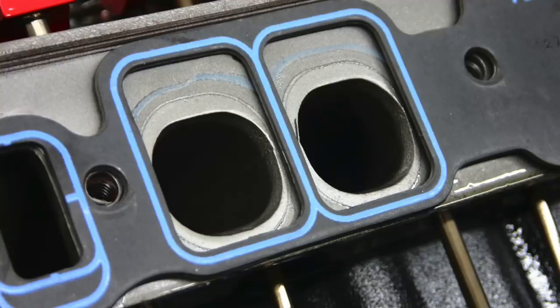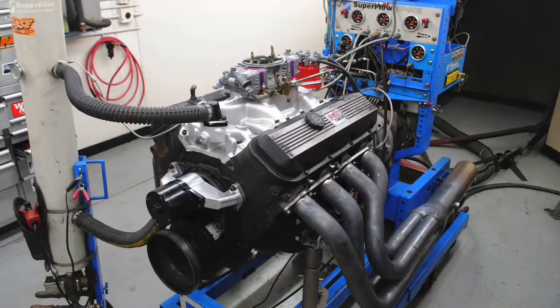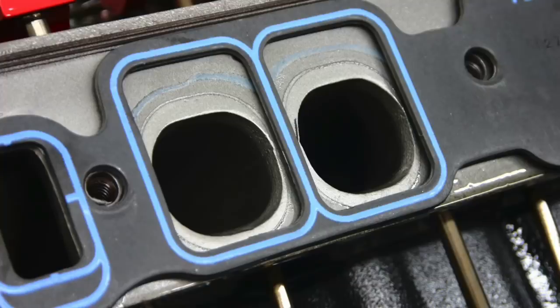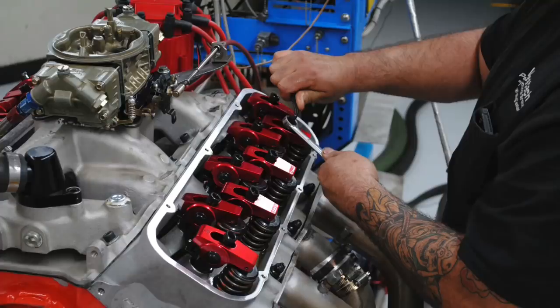In this video, we're going to show you modifications to the Gen 5 peanut port motor. We went to the wrecking yard and got a stock motor and ran it in stock trim. Then we added a camshaft. Then we got more serious with our mods but retained the peanut port heads. Then we replaced the peanut port heads with something even better. Let's check it out.